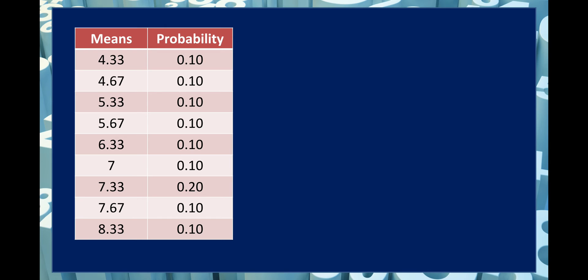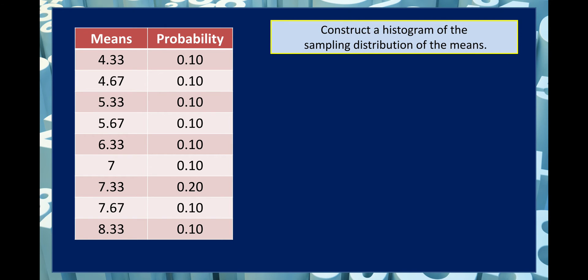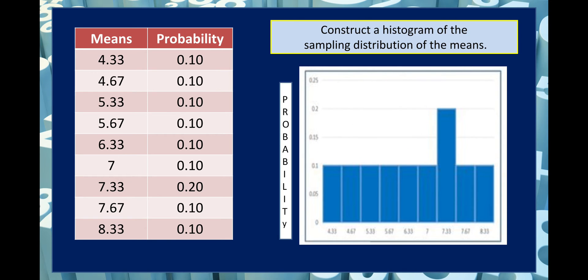We then construct a histogram of the sampling distribution of the sample means. The vertical axis represents probability and the horizontal axis represents the sample means. For the sample mean 7.33, the bar height is 0.20, while all other bars have a height of 0.10.